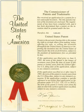For example, many inventions are improvements of prior inventions that may still be covered by someone else's patent. If an inventor obtains a patent on improvements to an existing invention which is still under patent, they can only legally use the improved invention if the patent holder of the original invention gives permission, which they may refuse.